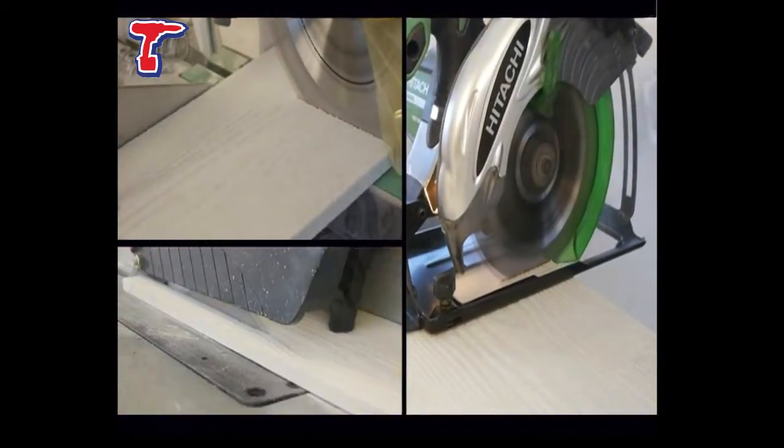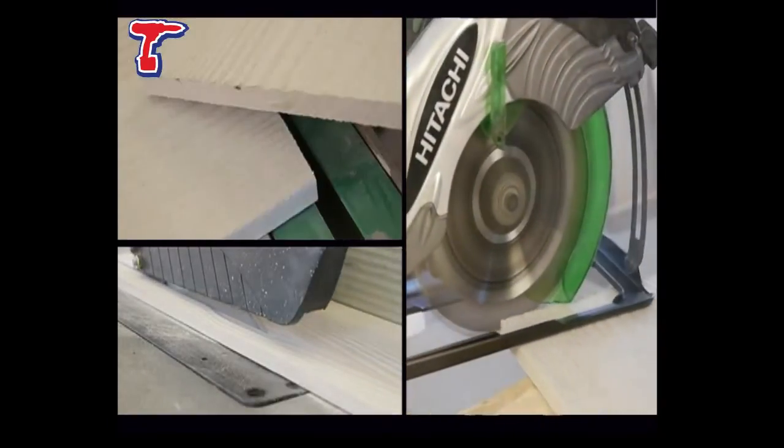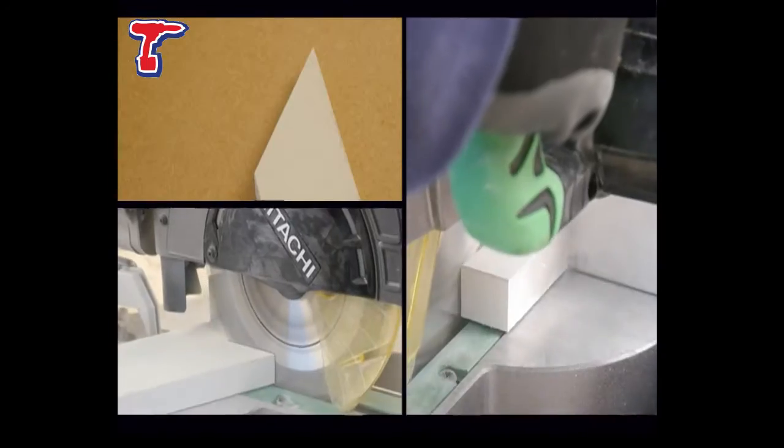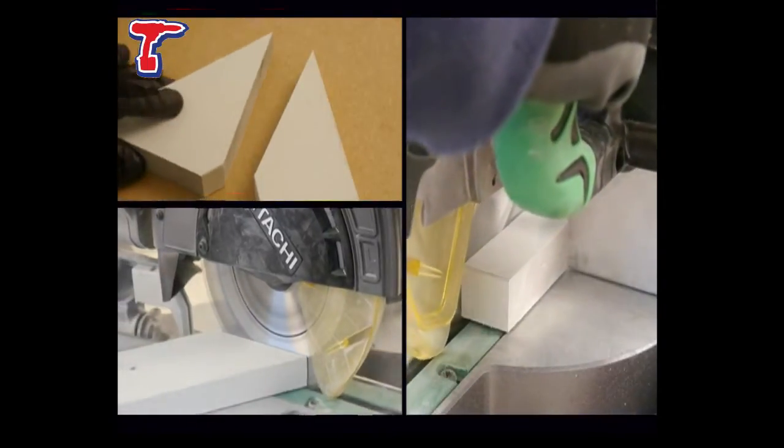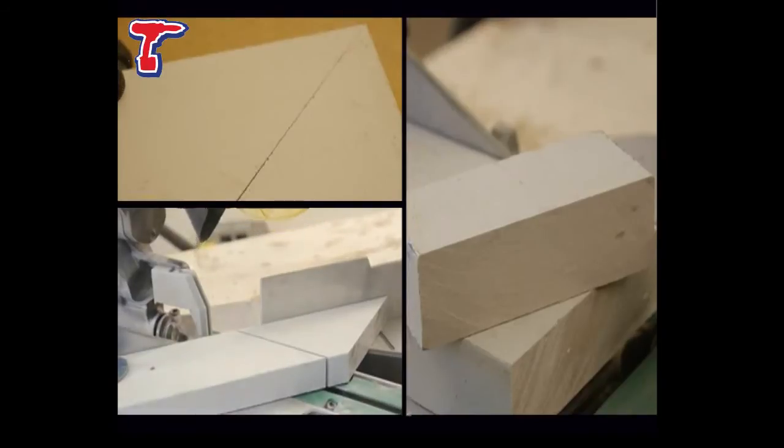Here, the FiberFast blade is cutting through popular cement fiber products, Marley Eternit and a James Hardy reveal trim. In addition to the fast speed of cut and long life, the FiberFast blade produces such a clean cut, it eliminates the need to try and make good.